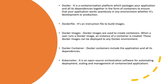When a user runs a Docker image, an instance of a container is created. These Docker images can be deployed to any Docker environment. What is a Docker container? A Docker container includes the application and all its dependencies together. Finally, what is Kubernetes? Kubernetes is an open source orchestrator software for automating deployment, scaling, and management of containerized applications.